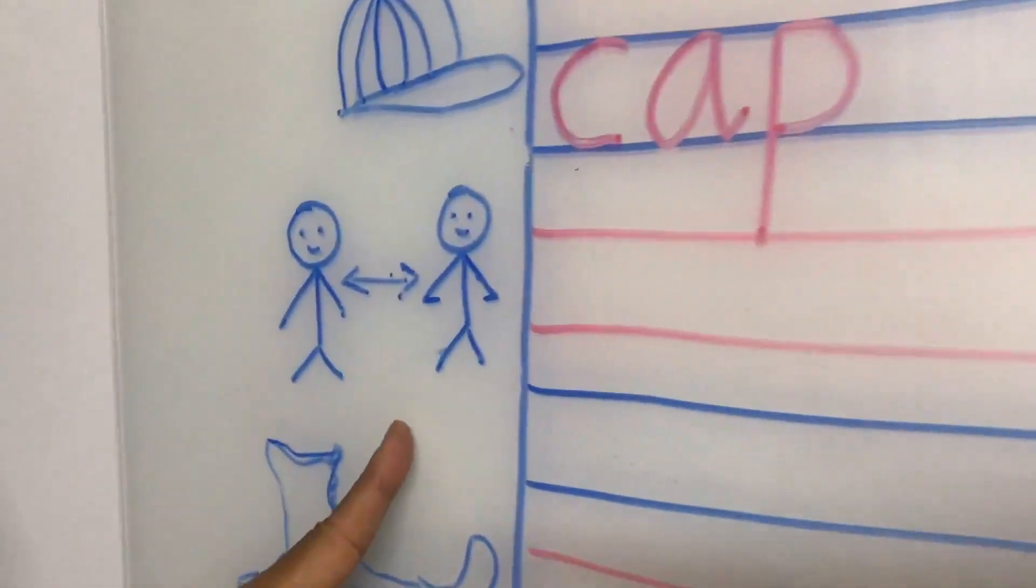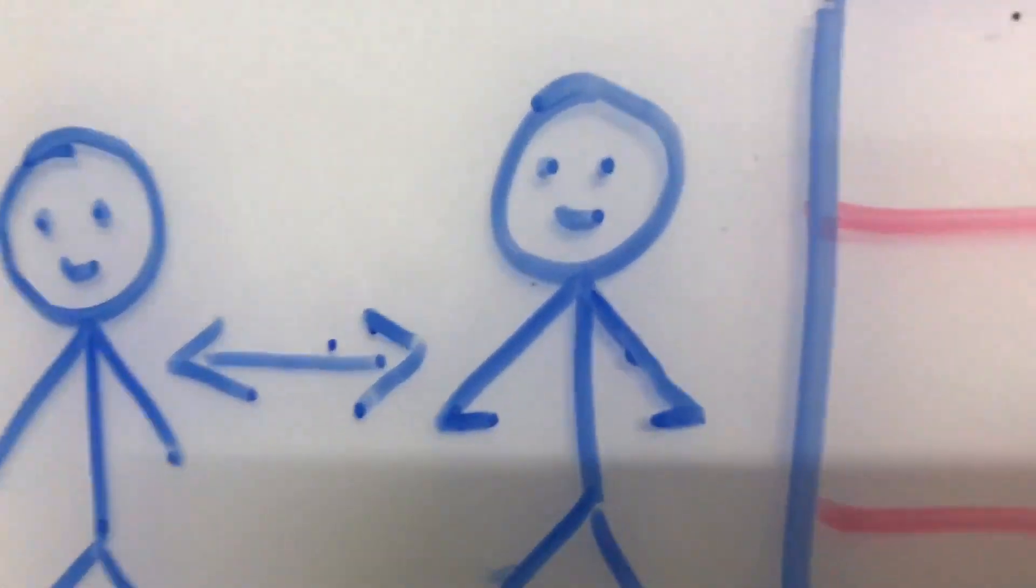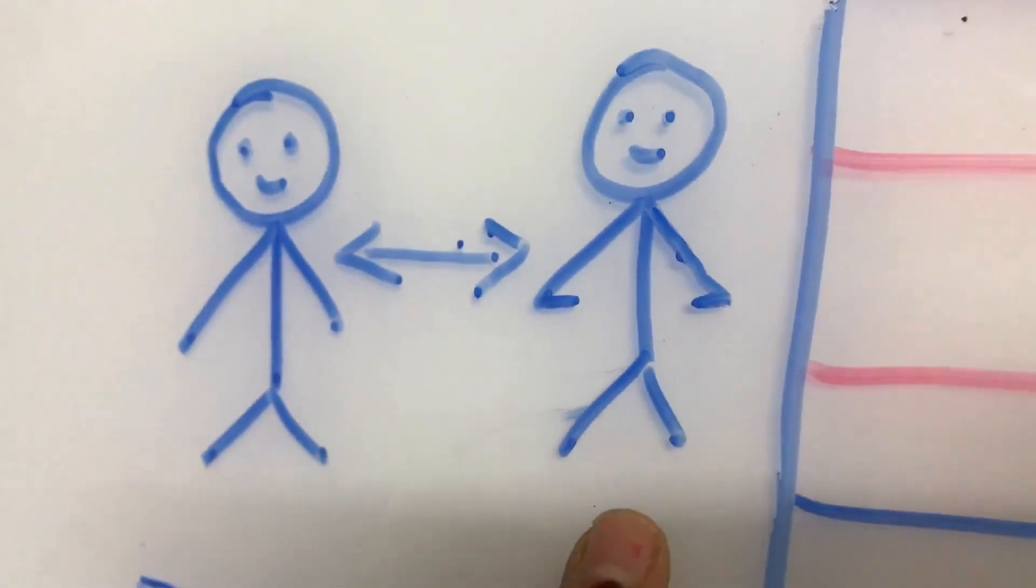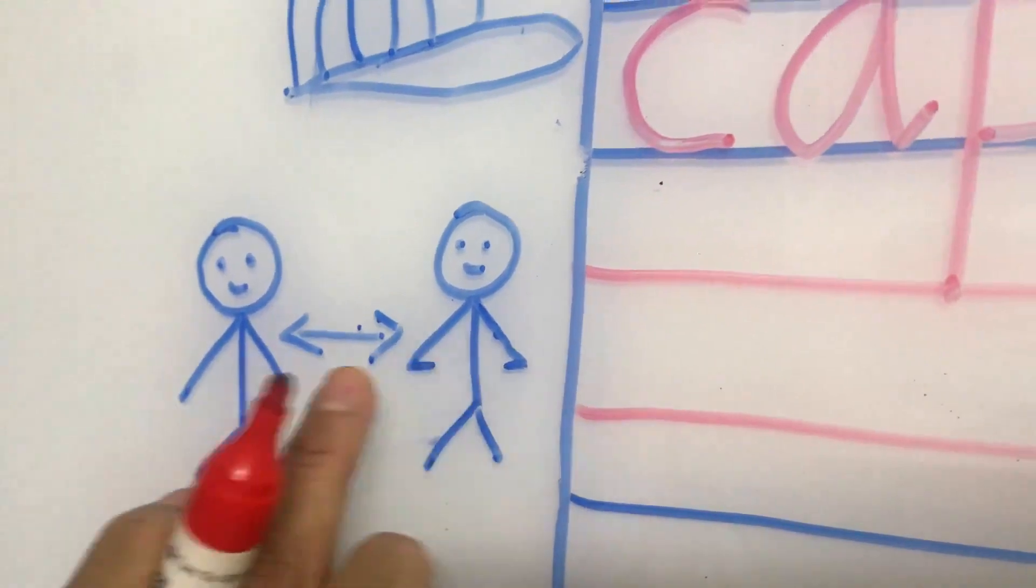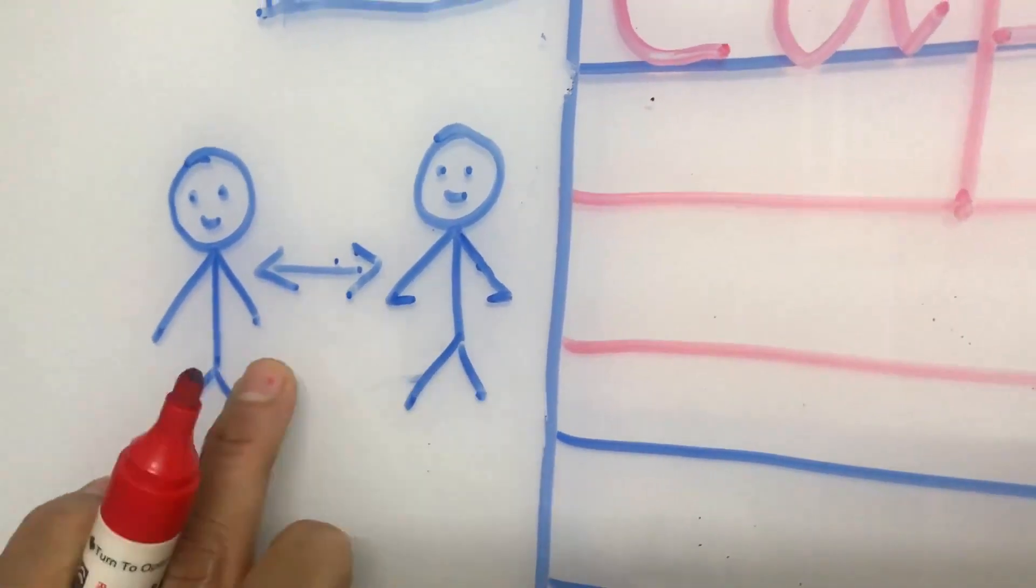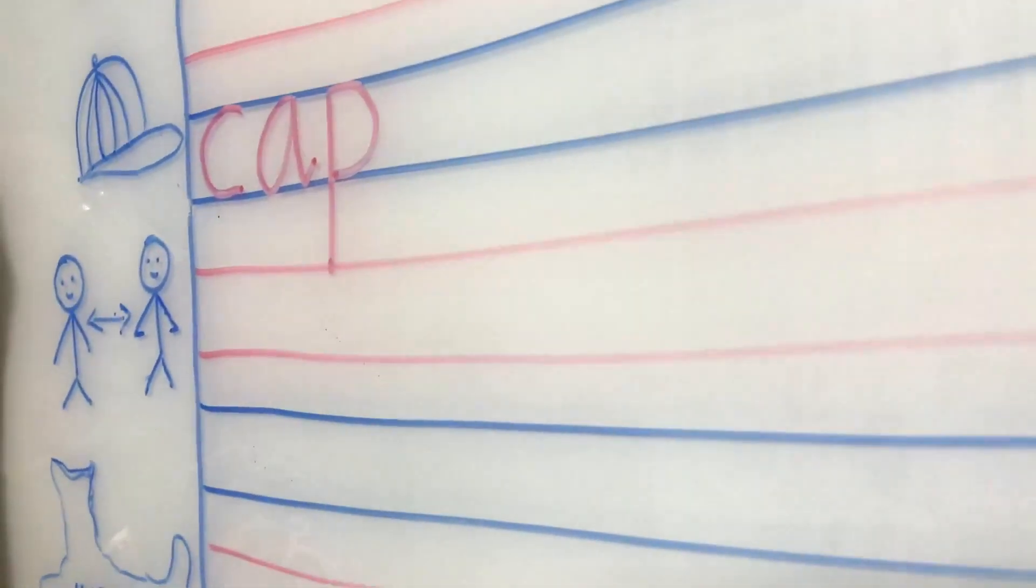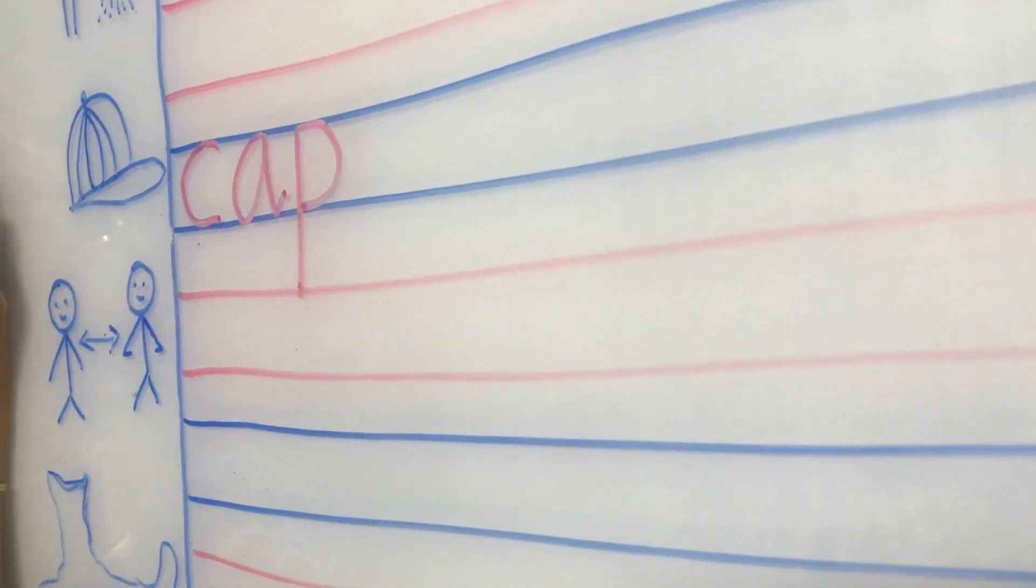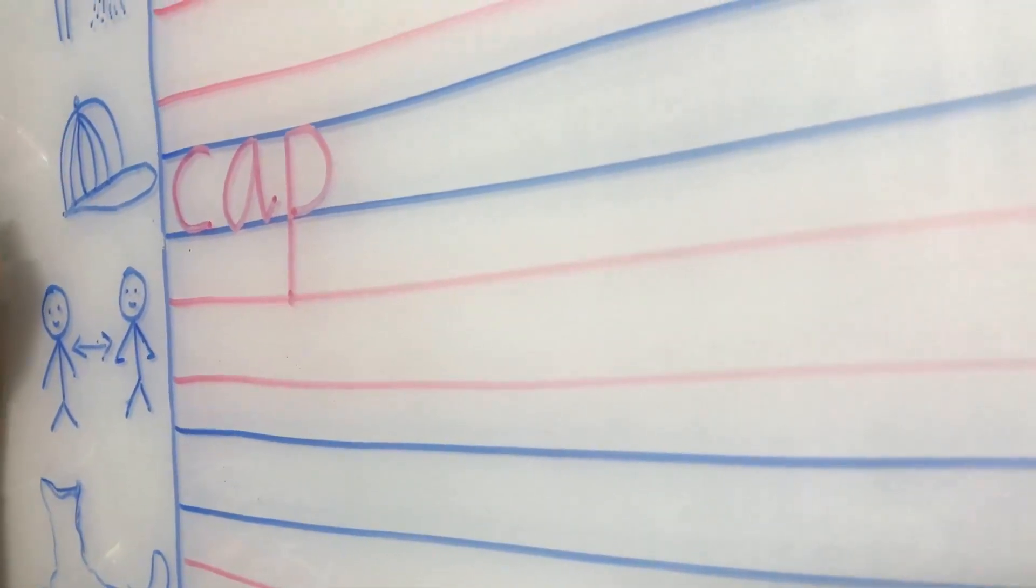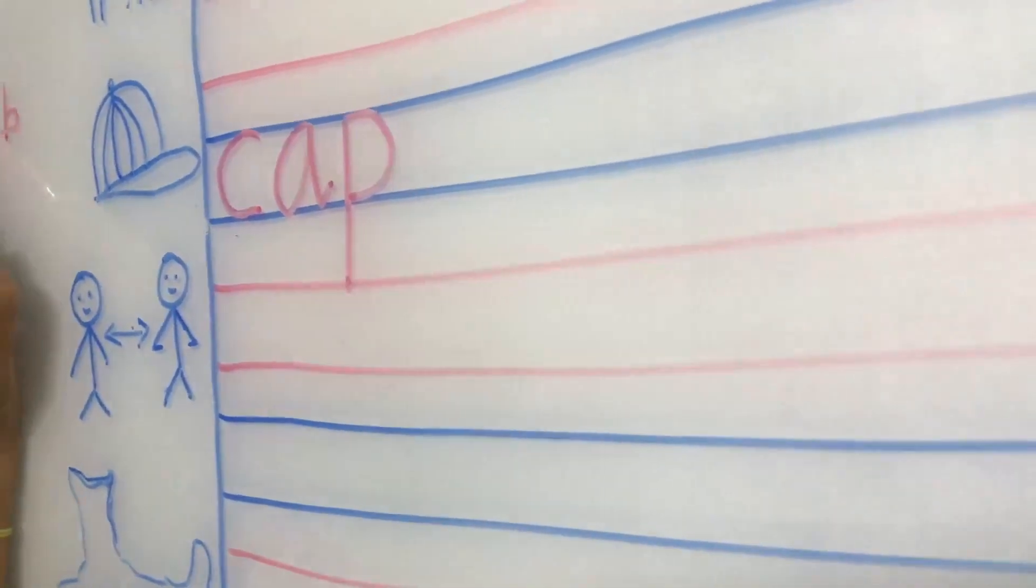This one, this is gap. Here baby is there, no? Here one more baby is there. In between, gap is there. This is the gap. When you write the letters, madam will say write the B. You should give the gap in between. I used to say, you know, this is the gap.